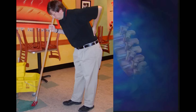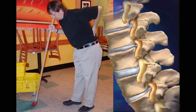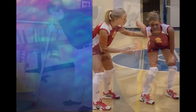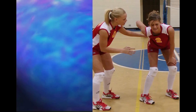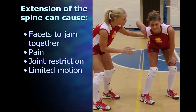Repetitive stress and arthritic changes to a Facet Joint can lead to enlargement of the facet, which leads to a narrowing of the space where nerve roots exit the spine to supply the muscles and organs of that body region. Facet Joint pain comes and goes and can be made worse by sudden movement. Usually, low back extension is the most painful movement with Facet Syndrome. Extension of the spine can cause facets to jam together, causing pain and joint restriction that limits movement.